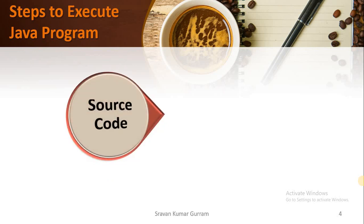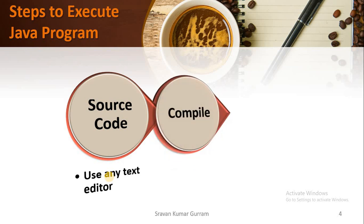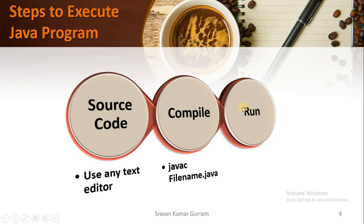The steps we need to follow to execute a Java program: first, we need to write the source code using any text editor. Second, compile — we write code in a high-level language that the machine cannot understand, so we translate it using the syntax: javac filename.java. Third, run the program using the syntax: java filename.